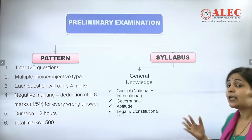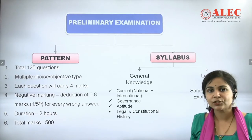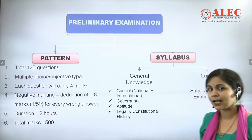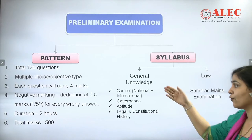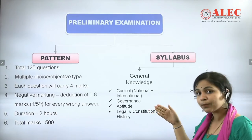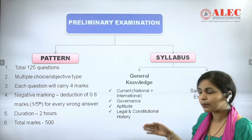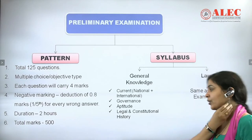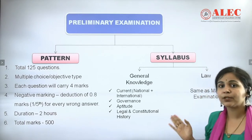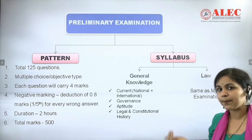The preliminary exam is divided into two parts: General Knowledge and Law. For General Knowledge, though Haryana has not fixed a specific number, typically there are 10 to 15 questions covering current national and international affairs, governance, aptitude, legal and logical reasoning, and legal and constitutional history. The law syllabus is the same for both the preliminary and mains examination, which I will cover in depth in the main slide.